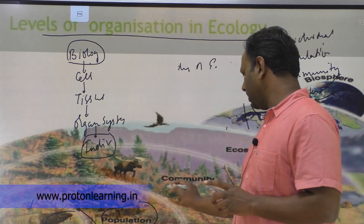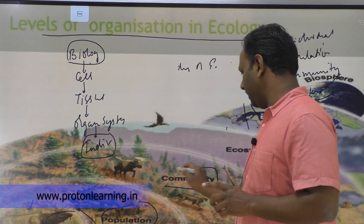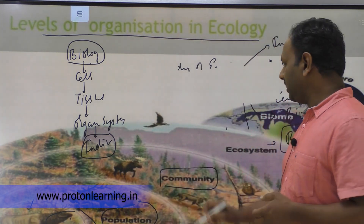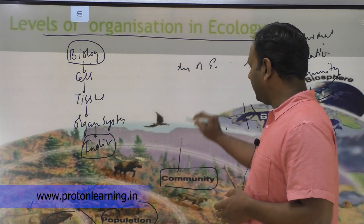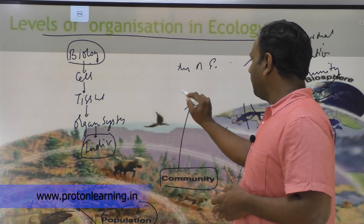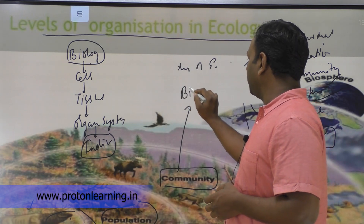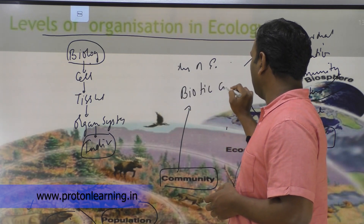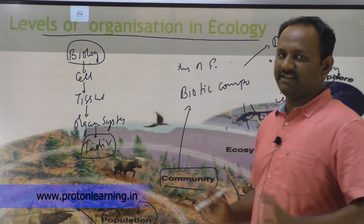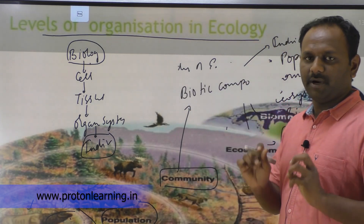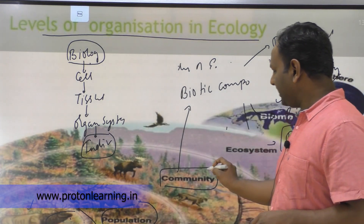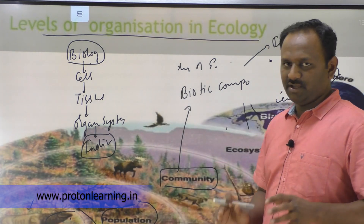Coming to the community part. What is this community? Community is the biotic components of an area or a particular area. We call it as community.